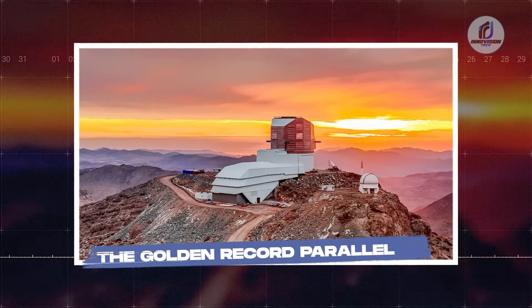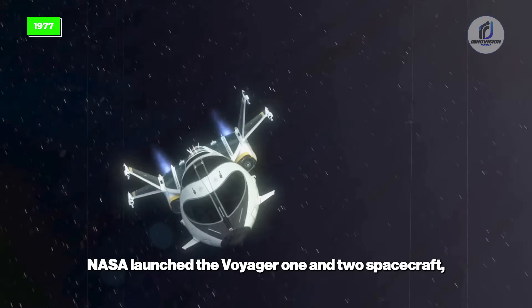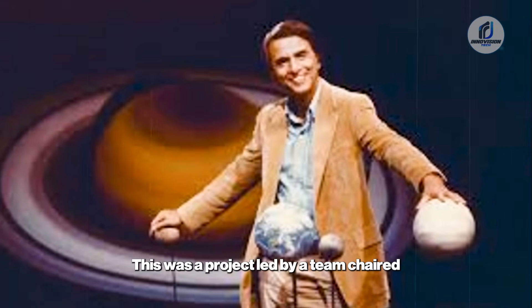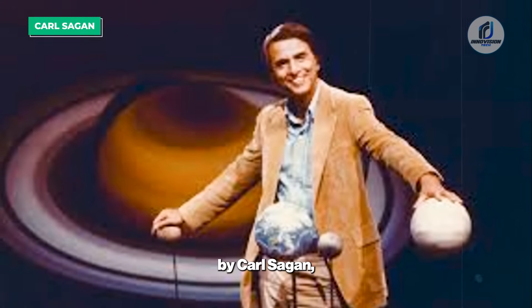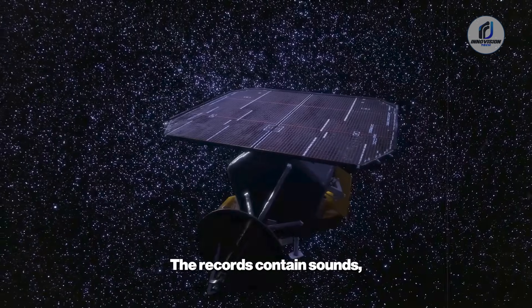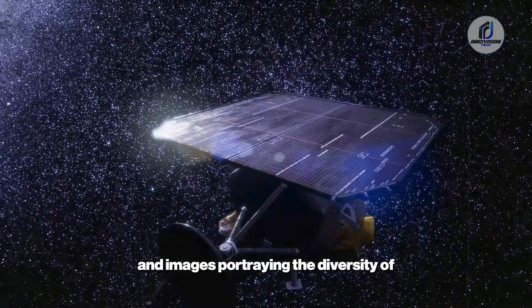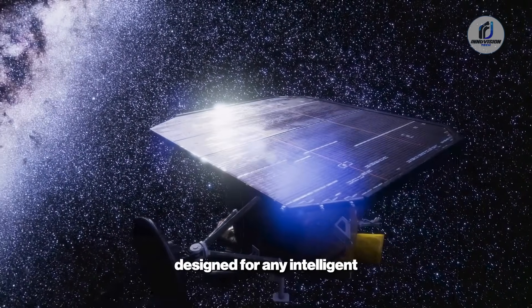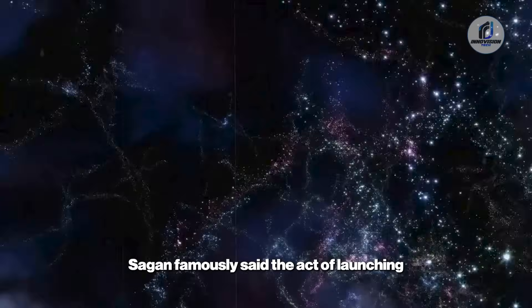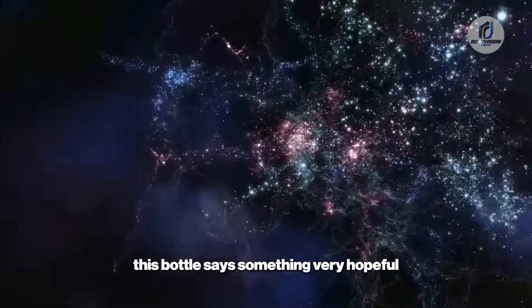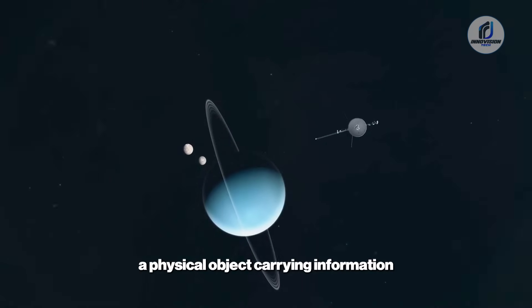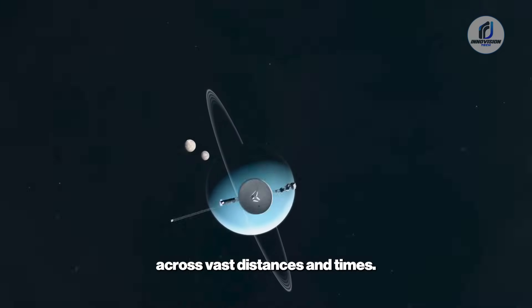The Golden Record Parallel. In 1977, NASA launched the Voyager 1 and 2 spacecraft, each carrying a golden record. This was a project led by a team chaired by Carl Sagan, intended as a message in a bottle cast into the cosmic ocean. The records contain sounds, music, and images portraying the diversity of life and culture on Earth, designed for any intelligent extraterrestrial life that might one day find them. Sagan famously said the act of launching this bottle says something very hopeful about life on this planet. The Golden Record is a time capsule, a physical object carrying information across vast distances and times.